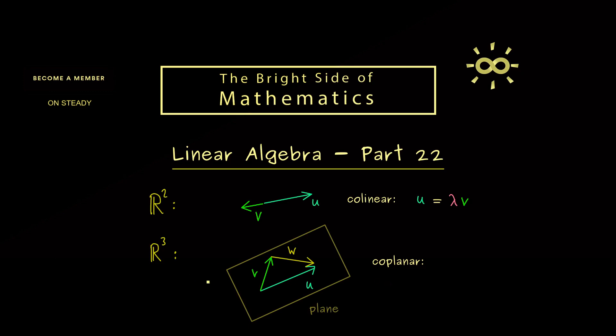Hence this is now what we would call coplanar. So in other words, we need to find two scalars. So we have λ times v plus μ times w. Therefore, what we see is that the vector u can be written as a linear combination out of the vectors v and w.